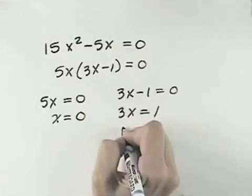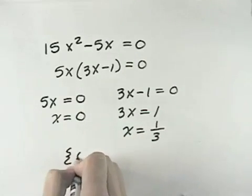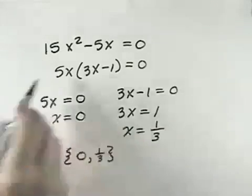Here we have to add the 1 to the other side, and then divide both sides by 3 to get 1 third. If we wrote this as a solution set, we'd have 0 and 1 third as the solutions to this polynomial equation.